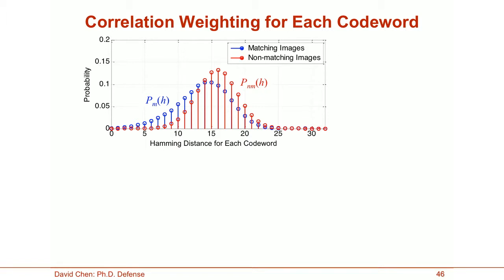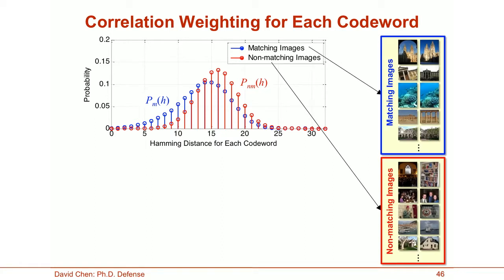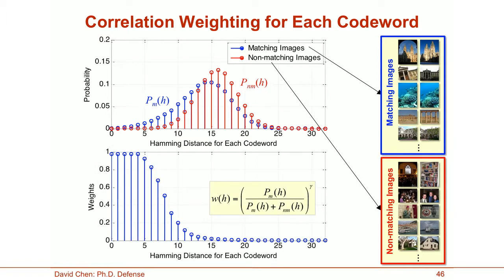The weights for the correlation values take advantage of differences in Hamming distance between matching and non-matching images. Plotting the probability of observing a Hamming distance H at a single codeword for matching images (blue) and non-matching images (red), there is a clear difference between the two distributions: smaller Hamming distances are more likely for matching image pairs. We therefore propose a weighting scheme that favors observations achieving lower Hamming distances, because these provide stronger cues for the presence of a matching image pair.